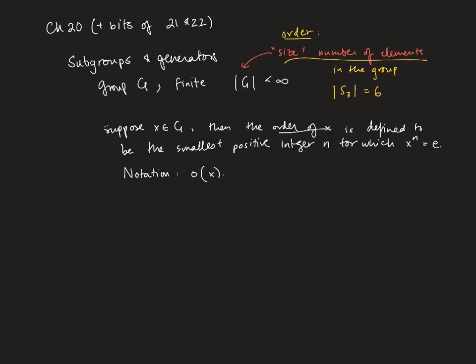Now in a finite group, every element will have finite order. That's something that you can read more about in chapter 21. But let me do an example here.